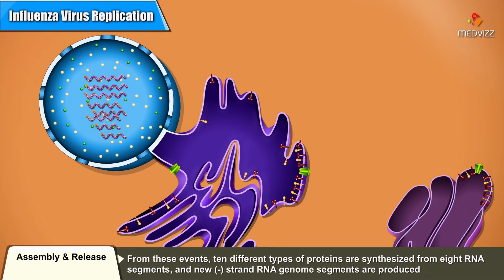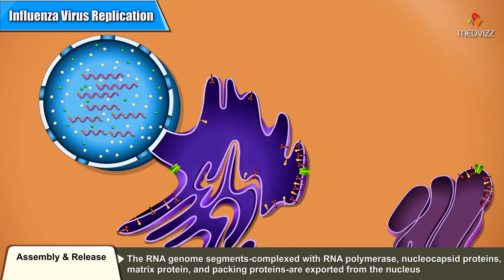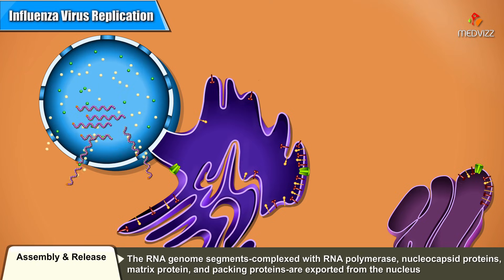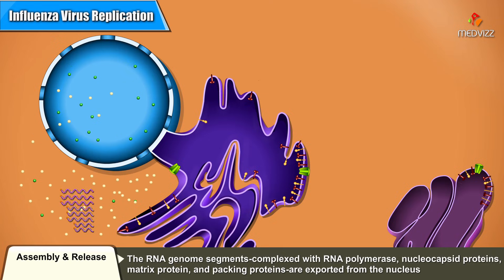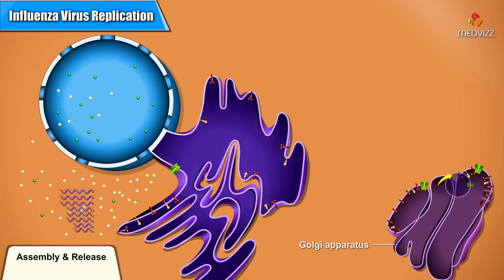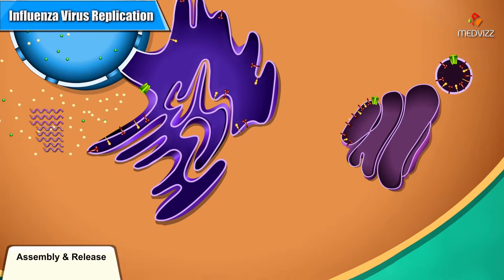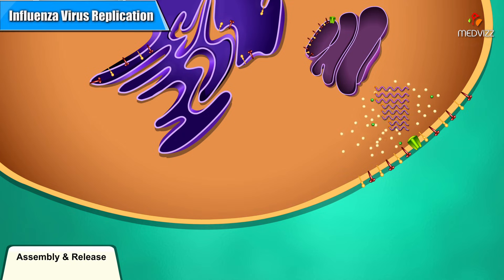From these events, ten different types of proteins are synthesized from eight RNA segments, and new minus-strand RNA genome segments are produced. The RNA genome segments, complexed with RNA polymerase, nucleocapsid proteins, matrix protein, and packaging proteins, are exported from the nucleus. The envelope proteins move by transport vesicles from the endoplasmic reticulum to the Golgi apparatus, and finally to the plasma membrane. The RNA protein complexes are then packaged into progeny viruses as they bud from the cell membrane.